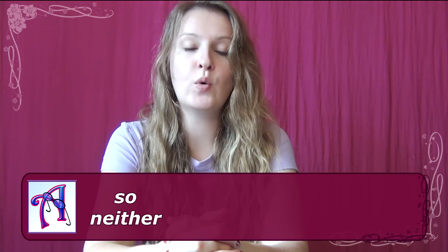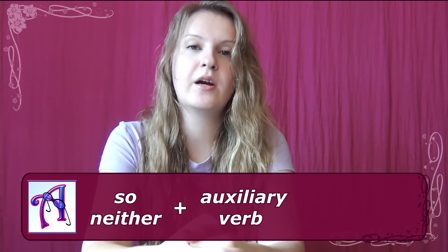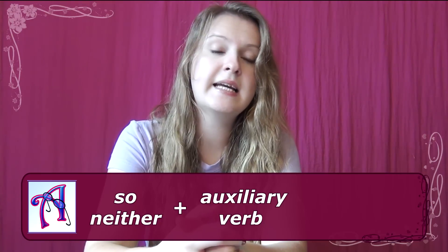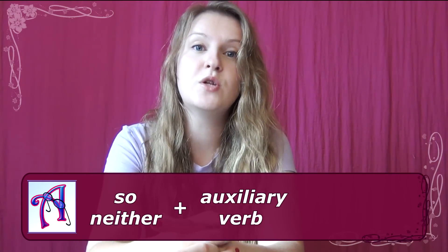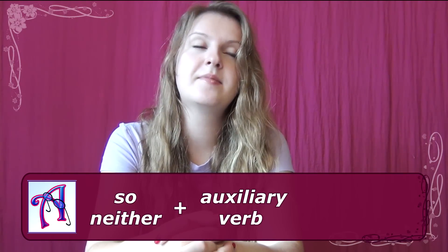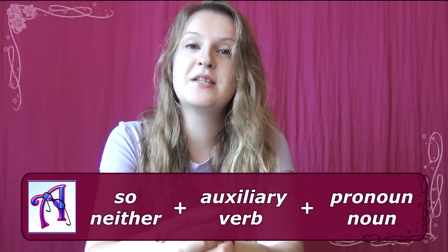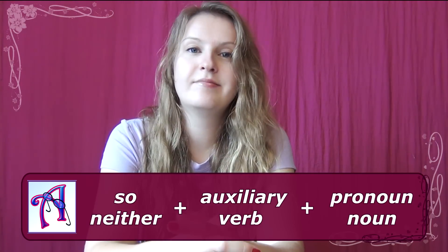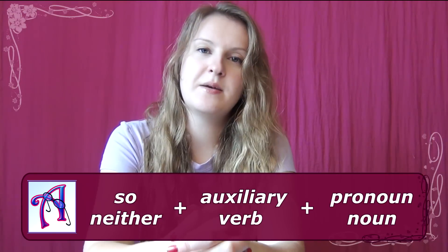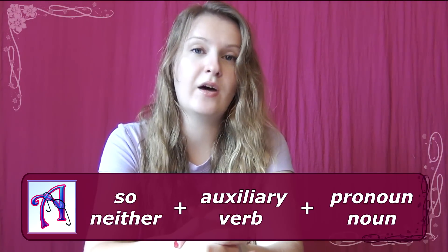Let's revise our formula. The first position is taken by 'so' if you agree to a positive statement, or 'neither' if you agree to a negative statement. The second position is an auxiliary verb closely connected with the tense form of the initial statement you are agreeing to. The third position is occupied by a pronoun, a proper noun, or any noun — it can be a phrase, but the main word should be a noun or a pronoun.